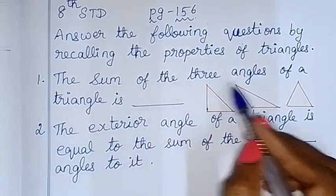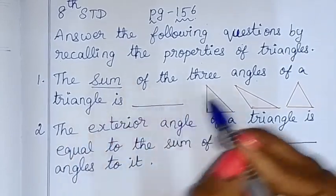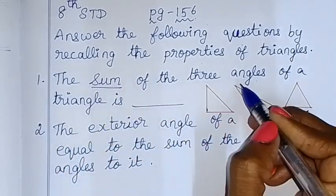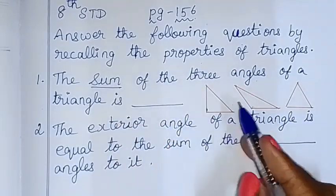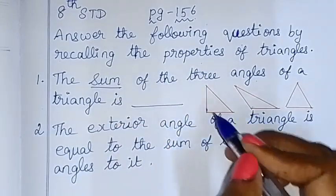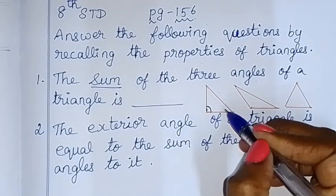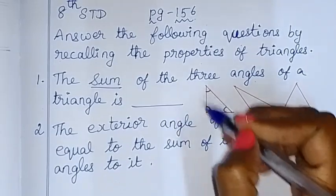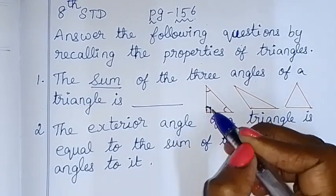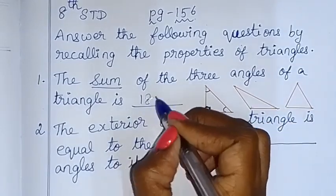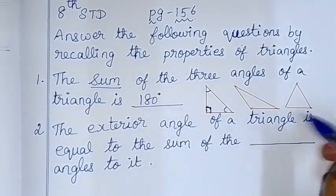The sum of the three angles of a triangle is 180 degrees. It is a triangle. The types include right angle triangle and obtuse triangle.